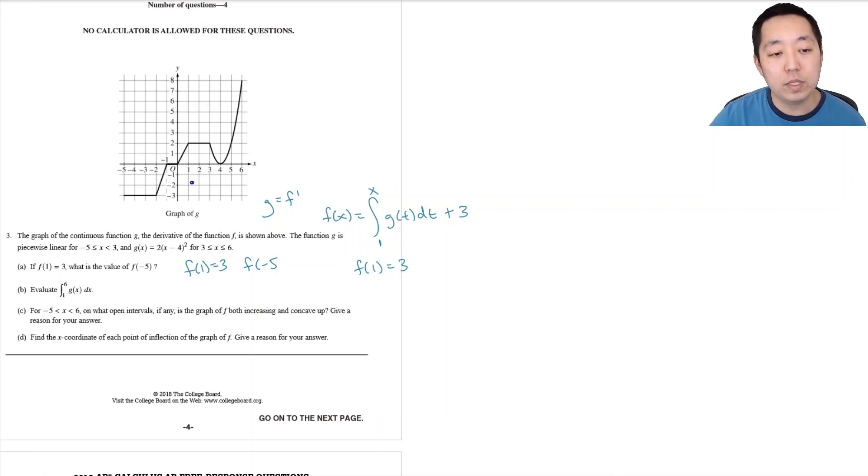Now they want to know what f of negative 5 is, so that's the integral from 1 to negative 5 g of t dt plus 3. Well, this is the area from 1 to negative 5.